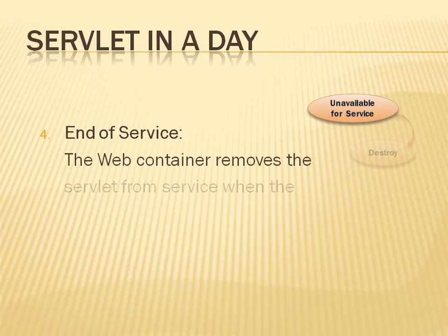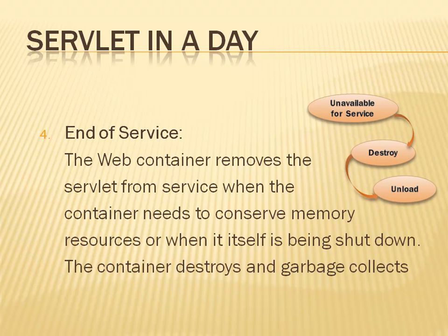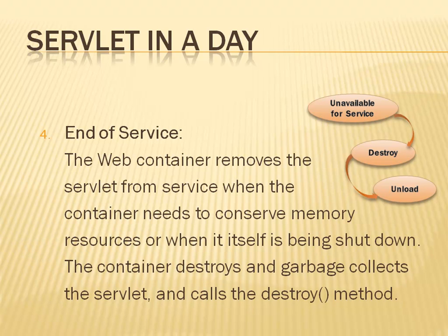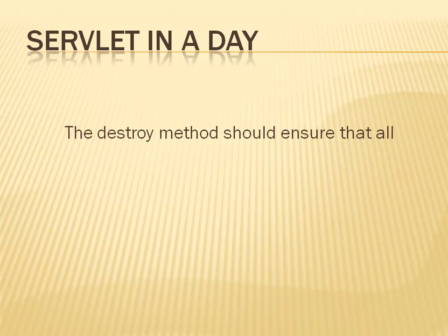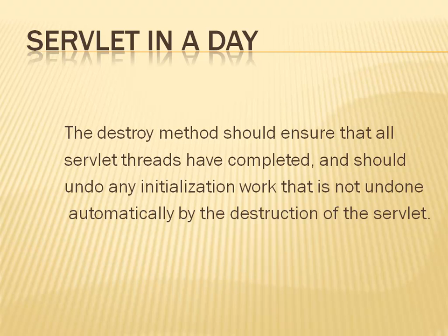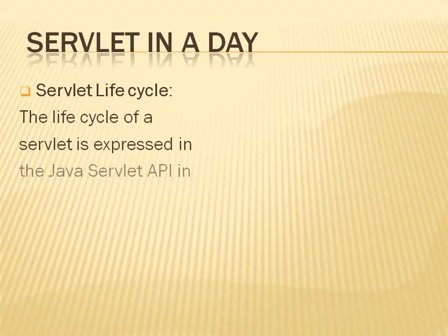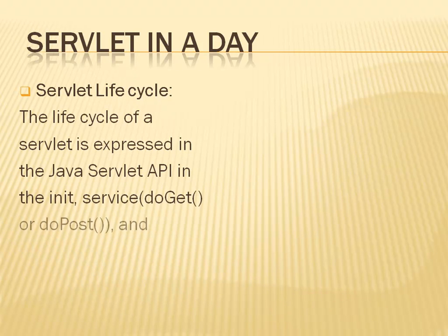4. End of service — The web container removes the servlet from service when it needs to conserve memory resources or when it is being shut down. The container destroys and garbage collects the servlet and calls the destroy method. The destroy method should ensure that all servlet threads have completed and should not do any initialization work not done automatically by the destruction of the servlet. The life cycle is expressed in the Java Servlet API through the init, service (doGet or doPost), and destroy methods of the servlet interface.